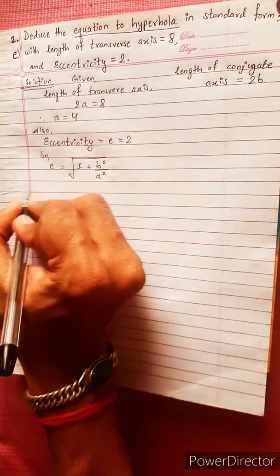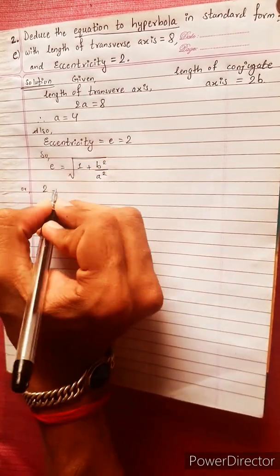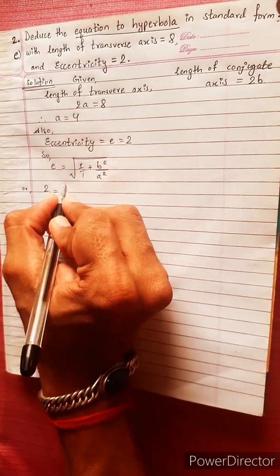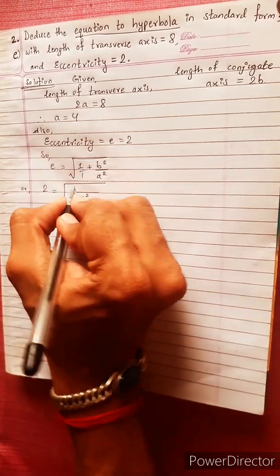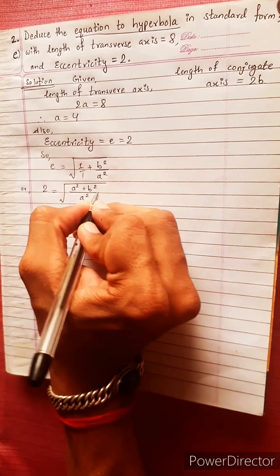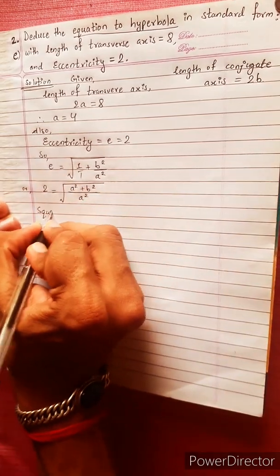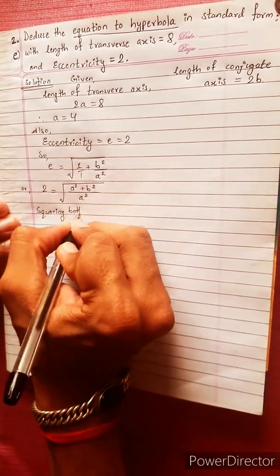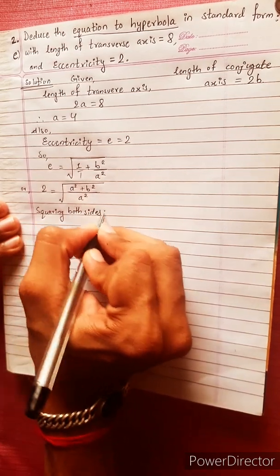E1 equals to, or 2 equals to under root of a squared plus b squared. Squaring both sides, squaring both sides, we get.